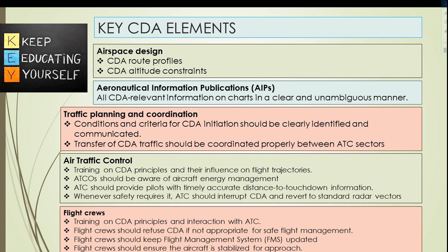Key CDA elements — airspace design: flight procedures should be designed such that CDA route profiles are achievable for all aircraft types and flight conditions. CDA altitude constraints should preferably be defined and expressed as 'at or above' for STARs or 'at or below' for SIDs, rather than fixed prescribed altitudes. CDA altitude constraints should be compatible with speed constraints. Aeronautical information publications (AIP) should be published with all CDA-relevant information on charts in a clear and unambiguous manner.